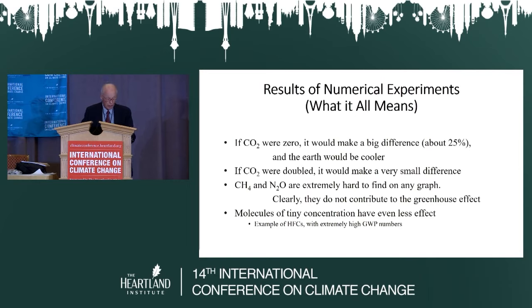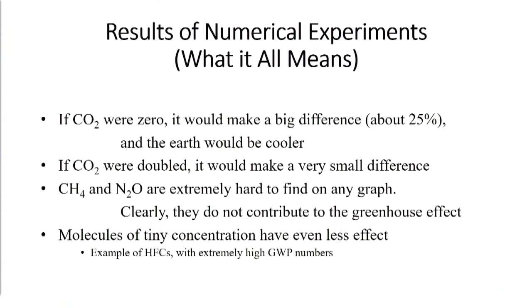The basic results are important. If CO2 were zero, it would make a big difference — about 25% — and the Earth would in fact be cooler. So CO2 is definitely a contributor to the greenhouse effect. But if CO2 were doubled, it would make only a very small difference. You heard Howard say 3.7 watts per square meter; 3.0 is another number being thrown about. But the particular difference due to doubling CO2 is just very, very small indeed. As you've just seen from these graphs, both CH4 and N2O are incredibly hard to find, and clearly they don't contribute to the greenhouse effect at all.